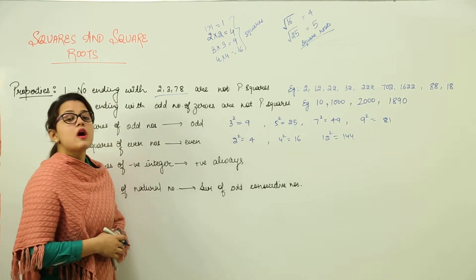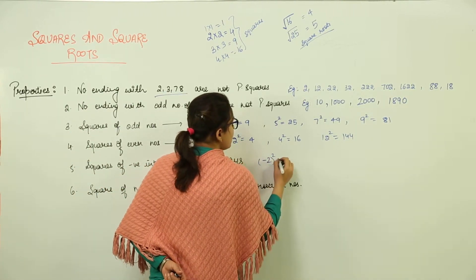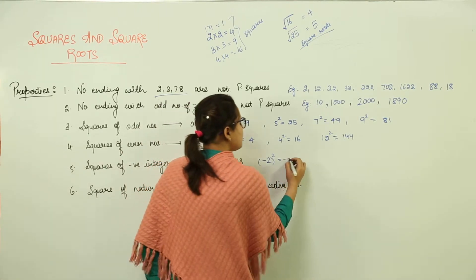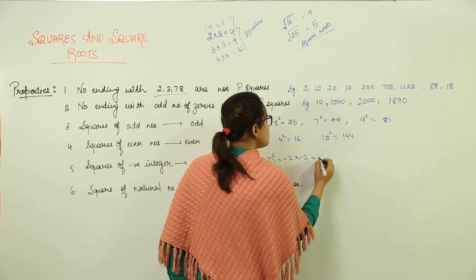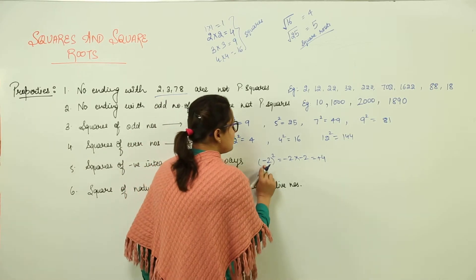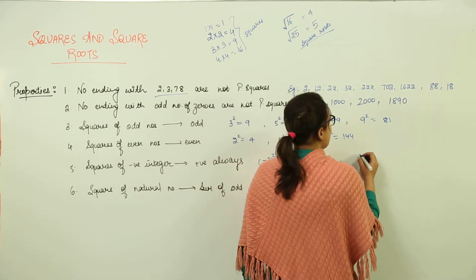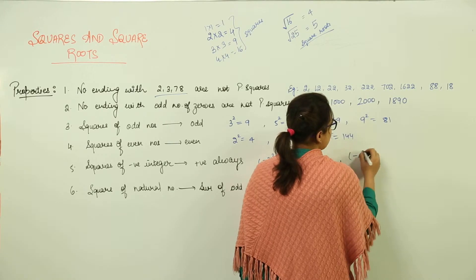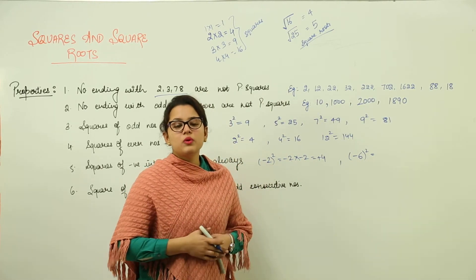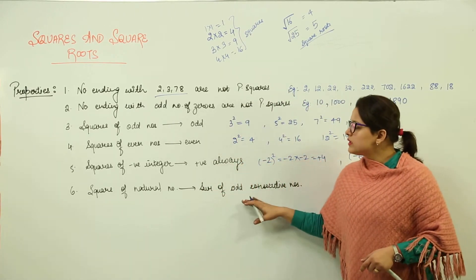Moving on to the next property: squares of negative integers are always positive. For example, if I take the square of minus 2, that means multiplying minus 2 two times — that is minus 2 into minus 2. Minus and minus becomes plus, so we get positive 4. No matter what negative number you take, when you multiply it two times, it will always convert to a positive result.